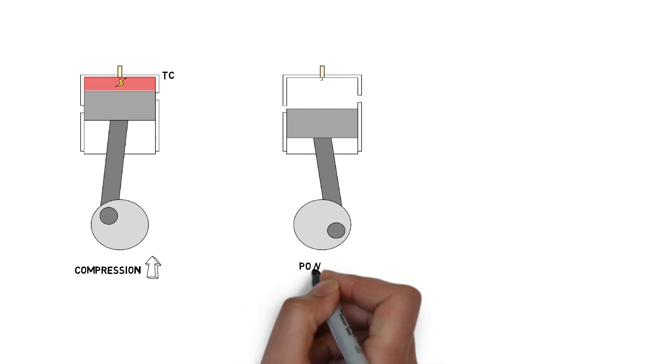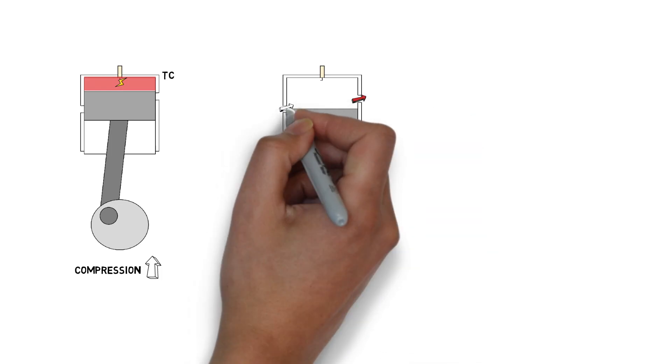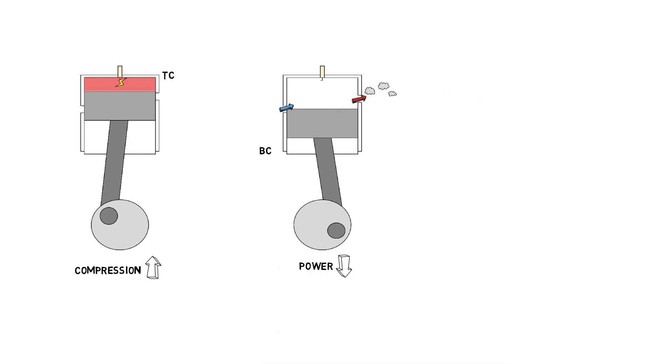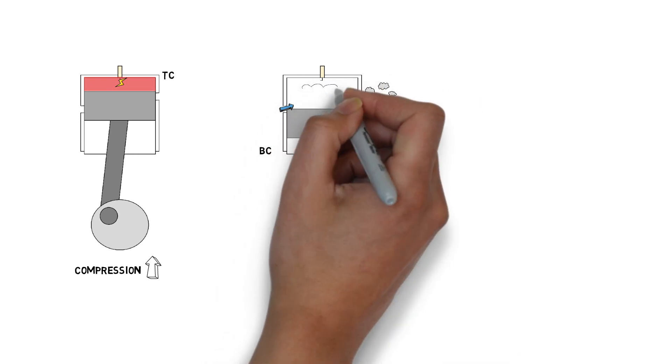The second stroke is power. The piston travels down from the increasing pressure. As it gets close to the bottom center, the exhaust port is exposed first, followed by the intake port. This allows for the combustion products to exit the chamber and then the compressed mixture in the crankcase is thrown into the cylinder.